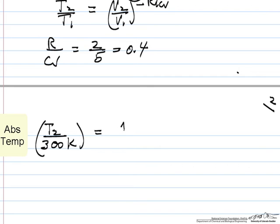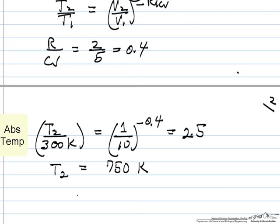The final volume is 1. Initial volume was 10 and minus 0.4. If we plug this into a calculator, it's 2.5. So this says our final temperature is 2.5 times 300, so our final temperature is 750 Kelvin.